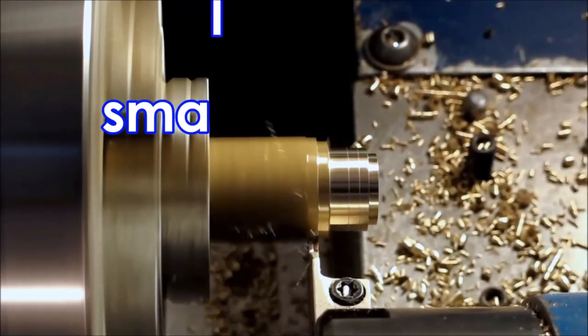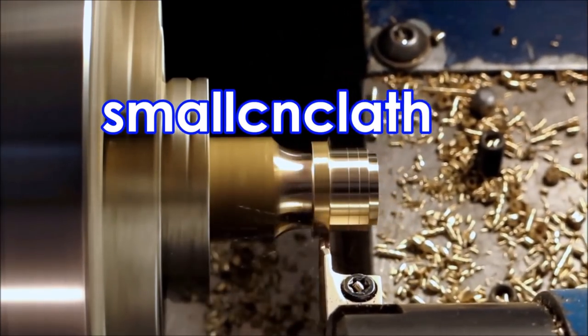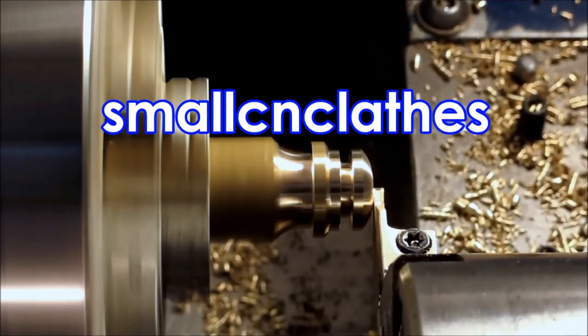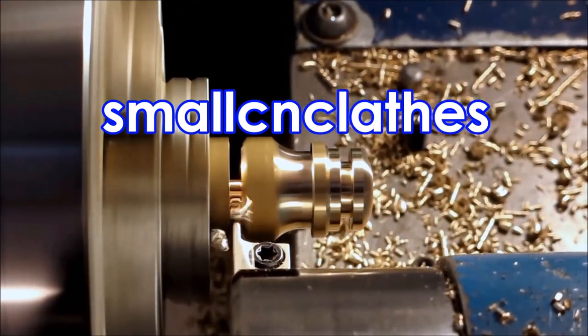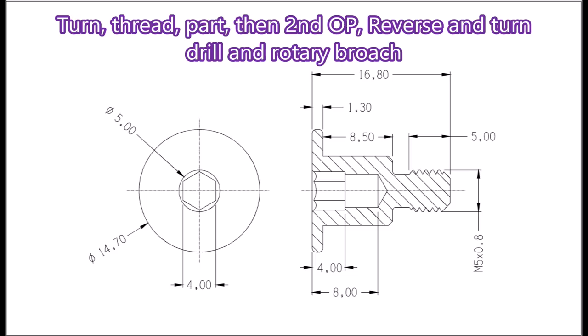This part is a shoulder screw with a 4mm hex socket, made of aluminum. It's only a prop; the proper ones will be made of steel. These are made to have photographs taken for the quality manual for assembly of the parts.